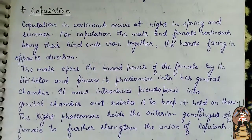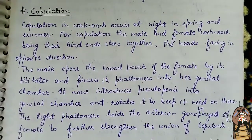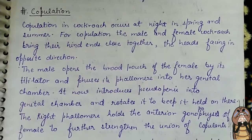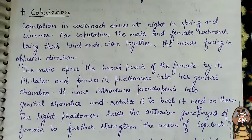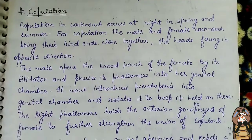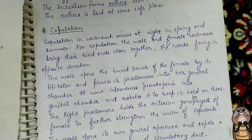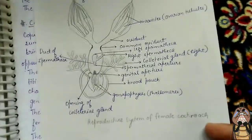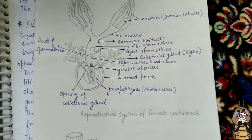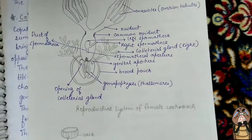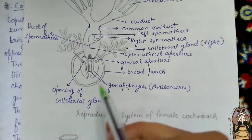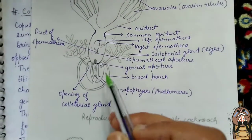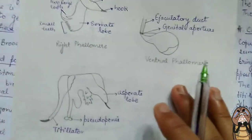The male opens the brood pouch of the female by its titillator and pushes its phallomere into her genital chamber. As seen in the diagram, this structure represents the brood pouch, and the brood pouch is opened by the male using its phallomere.